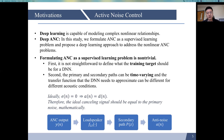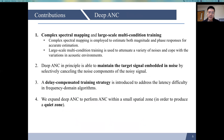However, as detailed in the following slides, we have access to the ideal cancelling noise to supervise network training, and the network can be trained to estimate, for a given input, some average of the different outputs for different scenarios. With these observations, ANC can be formulated as a deep learning task. Our study makes four major contributions. First, complex spectrum mapping is employed for accurate estimation, and large-scale multi-condition training is used to attenuate a variety of noises and accommodate variations in acoustic environments.